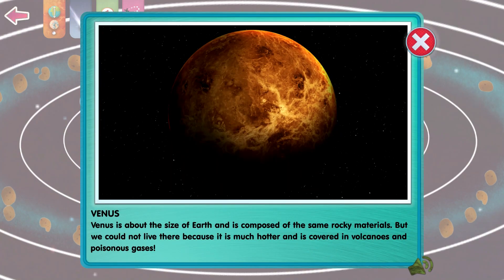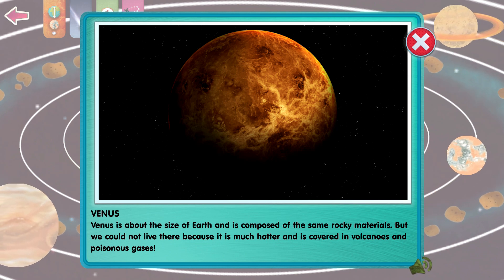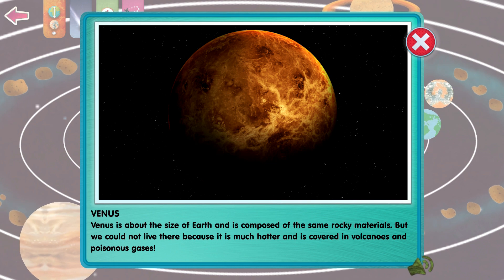Venus is about the size of Earth and is composed of the same rocky materials, but we could not live there because it's much hotter and is covered in volcanoes and poisonous gases.